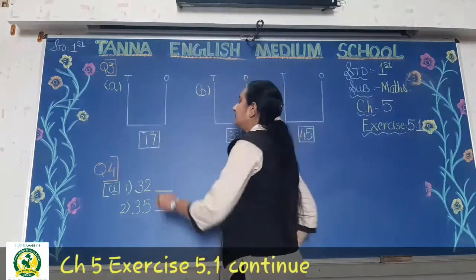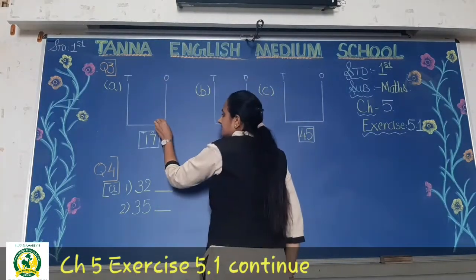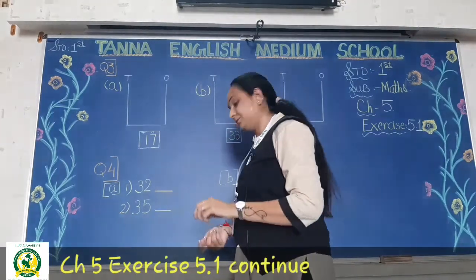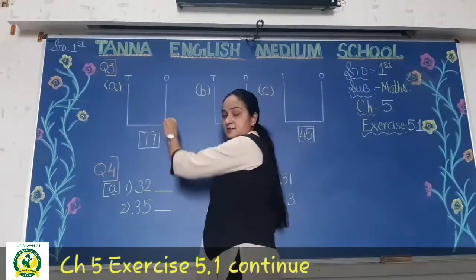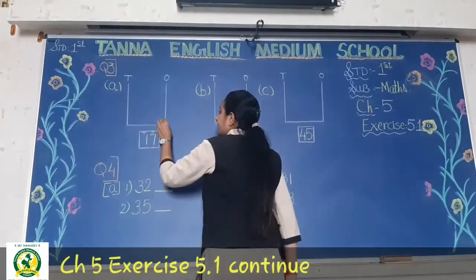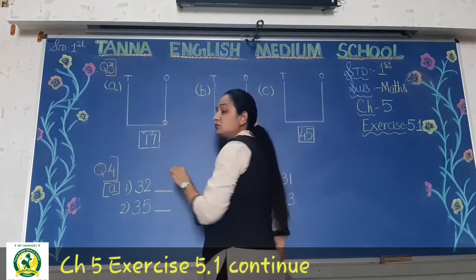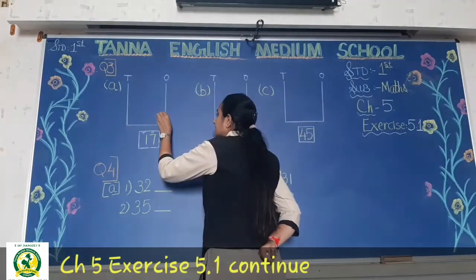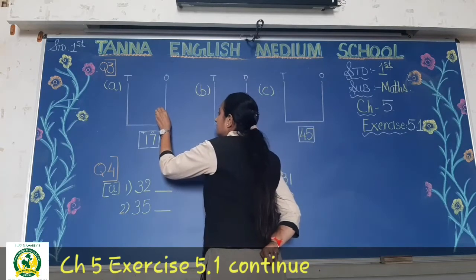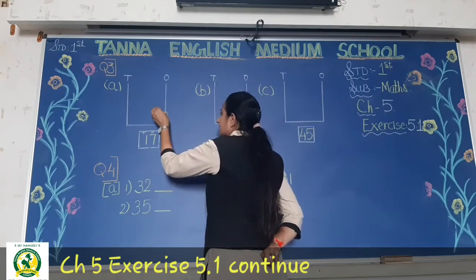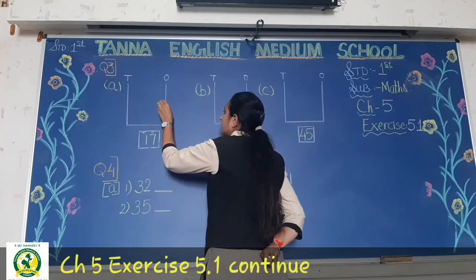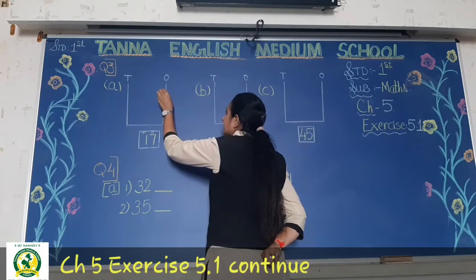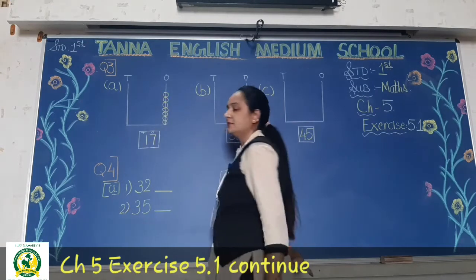So here first we will draw seven beads. Count and do it: one, two, three, four, five, six, seven. Okay, seven beads here.